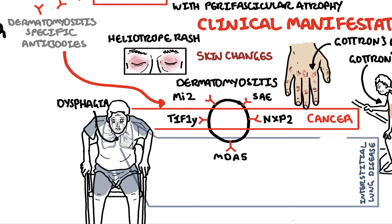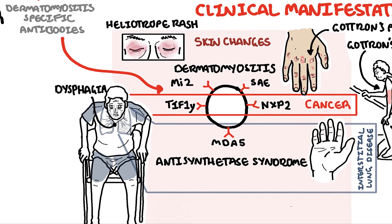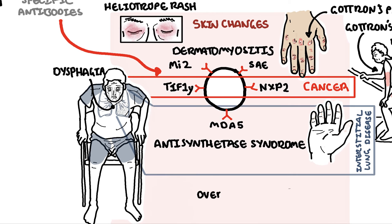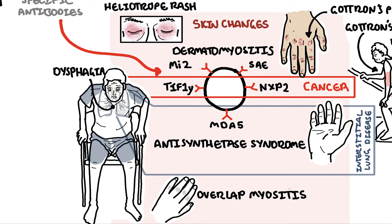Differential diagnoses to be aware of include other inflammatory myopathies such as antisynthetase syndrome, which can present with similar skin changes but is also associated with interstitial lung disease and mechanic's hands. Overlap myositis also presents with dermatomyositis skin changes, but is associated with other rheumatological conditions such as scleroderma and lupus. Here is an image of scleroderma hands called sclerodactyly.